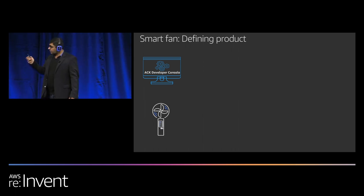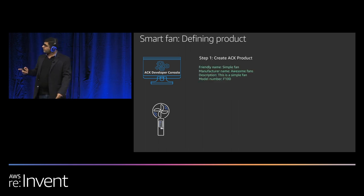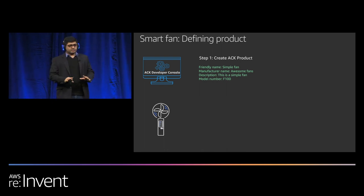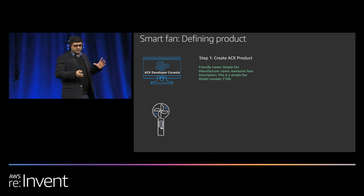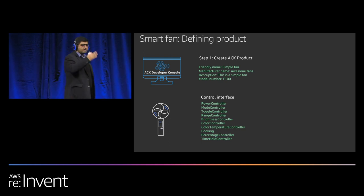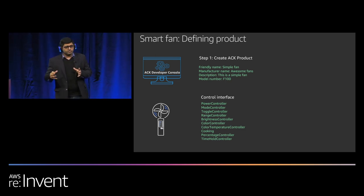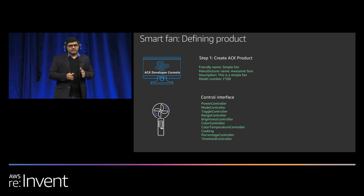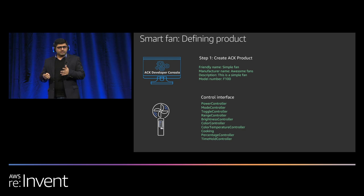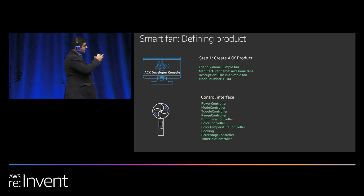As a manufacturer, you have two main tasks. First, you go to the ACK Developer Console and specify basic information: you've got a simple fan, your manufacturer name is Awesome Fans. Then you define the control interface. We have a lot of controllers — if you're not familiar with smart home APIs, controllers define the control experience. For example, the power controller specializes in the control experience for turning a device on and off.